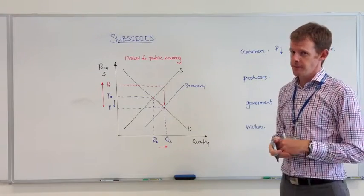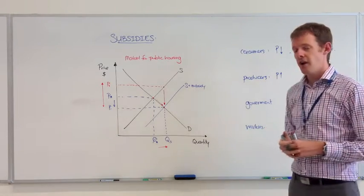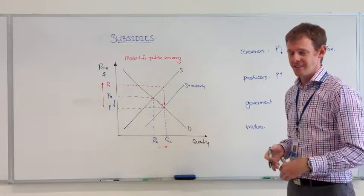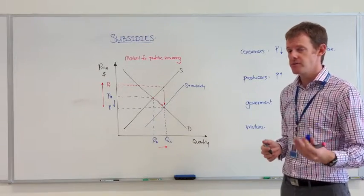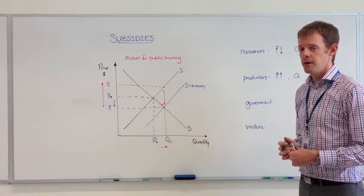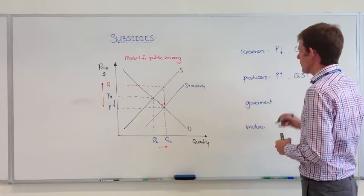Producers is interesting. Producers are offered a higher price than currently exists in the market to encourage them to produce more. So for them, the price goes up, and at the same time, the quantity supplied also increases.